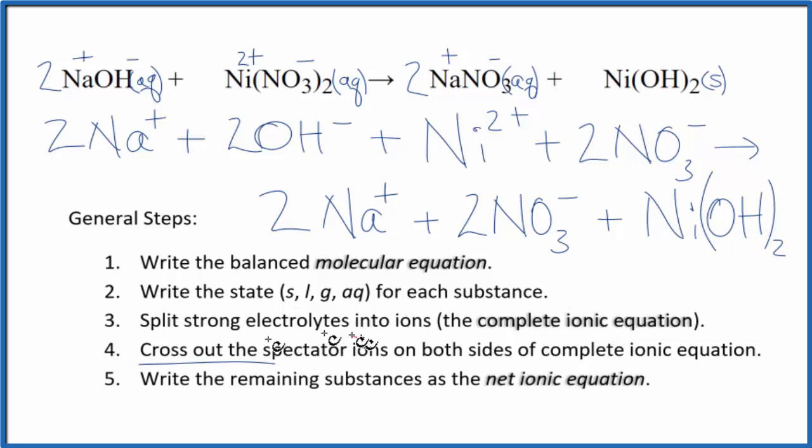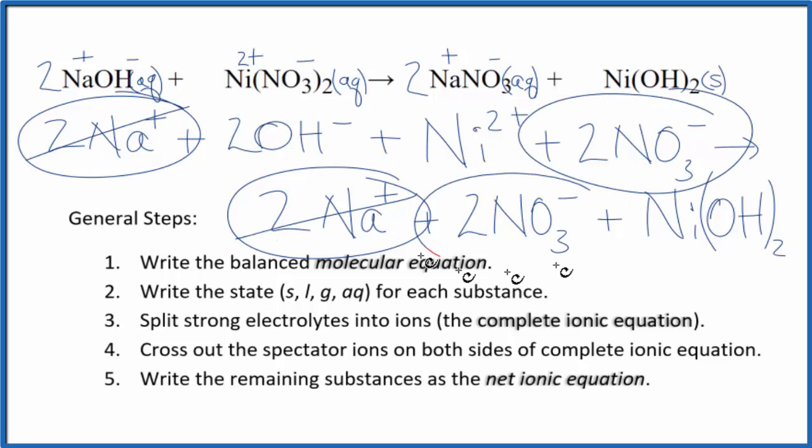Now we can cross out spectator ions. They're on both sides of the complete ionic equation. They haven't changed, so we're not interested in them. I can see in the reactants here, I have 2 sodium ions. In the products, I also have 2 sodium ions. They haven't changed. Cross them out. Here I have 2 nitrate ions, 2 nitrate ions in the products. Cross those out.